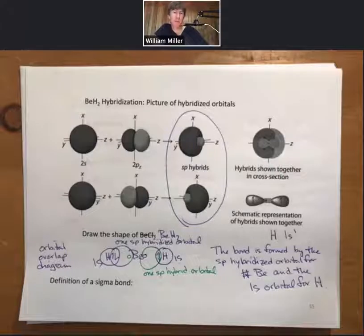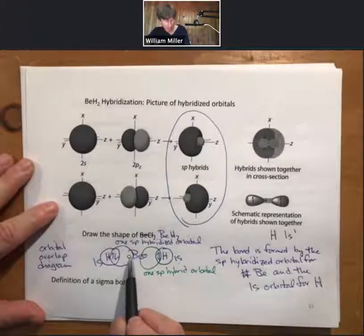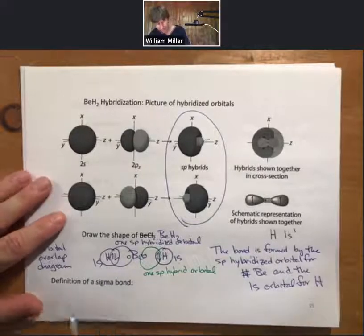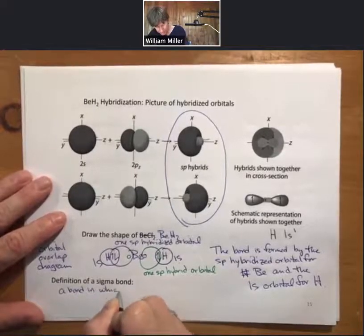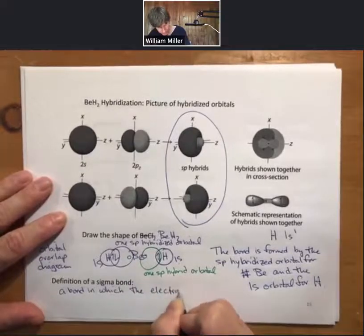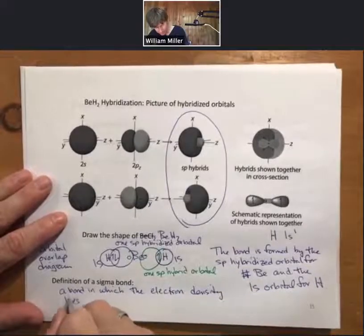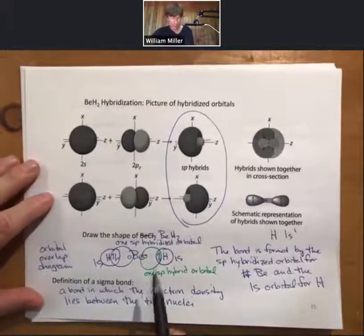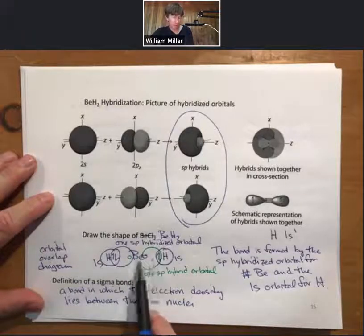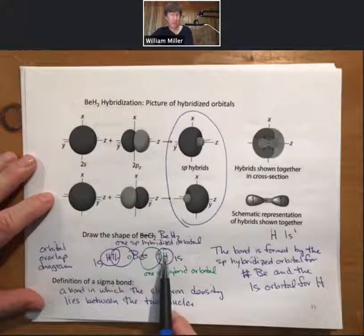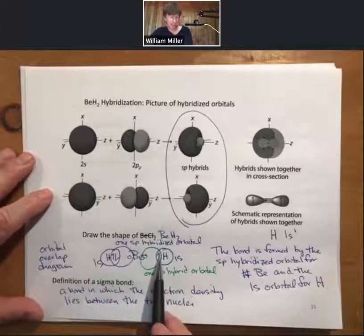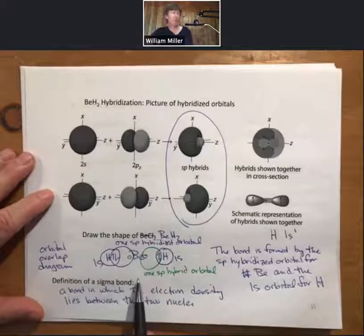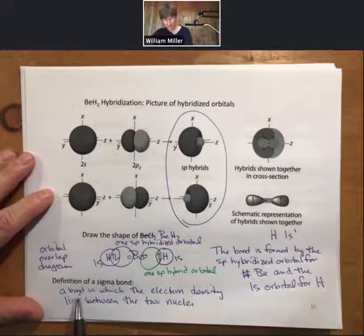We have one more thing to do: the definition of a sigma bond. A sigma bond is a bond in which the electron density lies between the two nuclei. The orbital overlap lies between the two nuclei. In future videos we will see electron density above and below — those will not be sigma bonds. A sigma bond is a bond in which the shared electrons lie between the two nuclei.